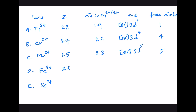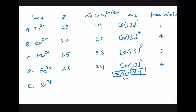For Fe²⁺, the atomic number of iron is 26. In Fe²⁺ the total number of electrons is 24, giving an electronic configuration of 3d⁶. This has 4 unpaired electrons, because when filling the 3d orbital you first place 5 electrons singly, and the sixth electron pairs up in the first orbital.